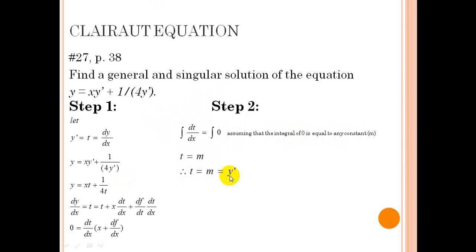since t is equal to m, then m is equal to y prime. By substituting this value of m to y prime, we have our general solution which is y equals xm plus 1 over 4m.